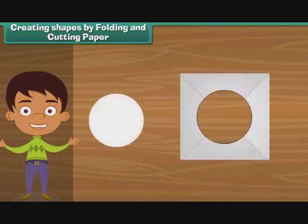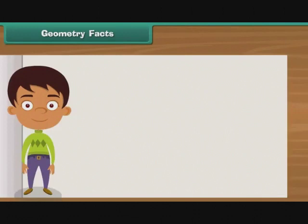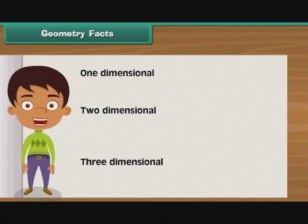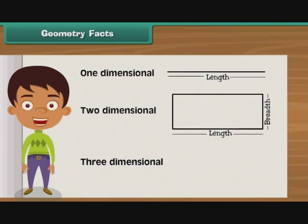Geometry facts are generally divided into three parts: one-dimensional, two-dimensional, and three-dimensional. One-dimensional geometry is called the line. Lines have only length. Two-dimensional geometry is about length and breadth. Three-dimensional geometry is about length, breadth, and height.